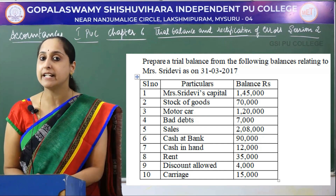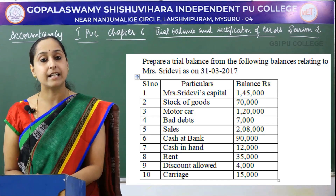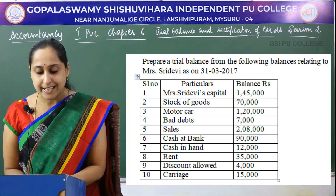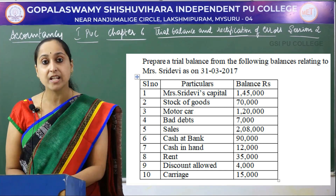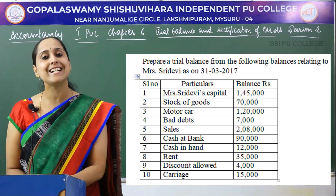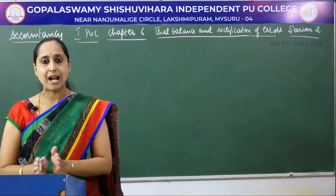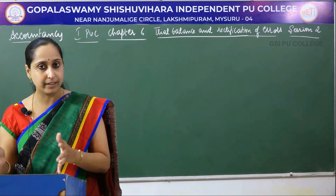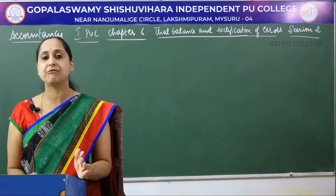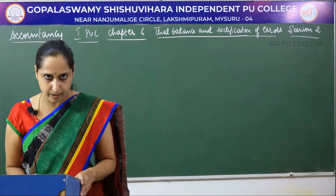All losses and expenses we have to record in the debit side. Sales — it is an income, we record it in credit side. Cash at bank is an asset, we record it in debit side. Cash in hand is an asset, we record it in debit column. Rent is an expense, we record it in debit column. Discount allowed 4,000 — we are giving discount, so it is a loss to us, that is why we record it in debit column. Carriage is related to travelling expenses of the business, that is an expense, again we record it in debit column. The rule is: all assets and expenses you have to record in debit column, and all income, gain, and liability you have to record in credit column.